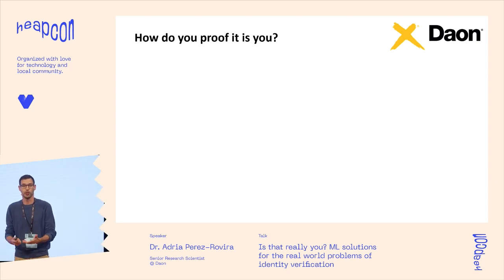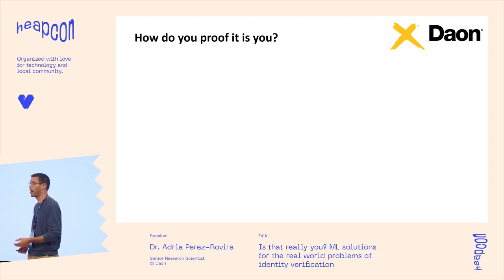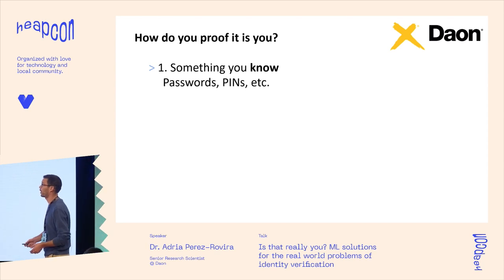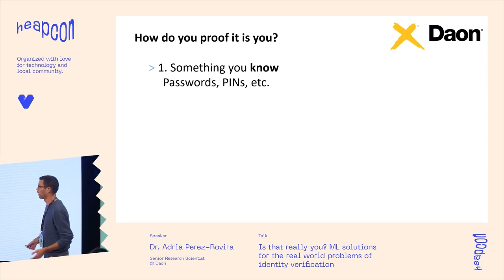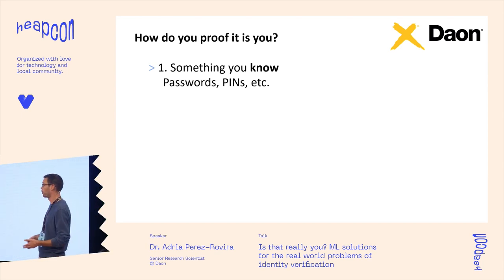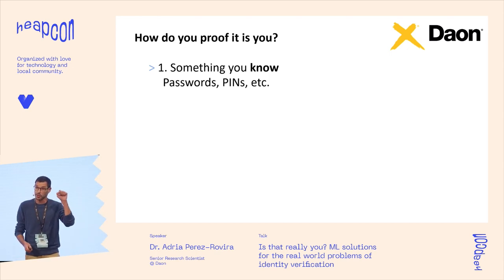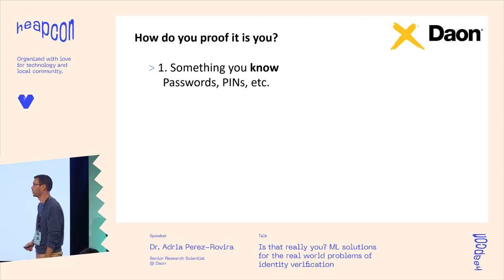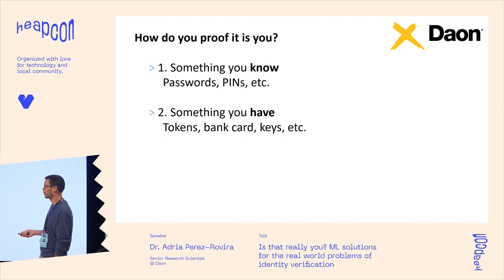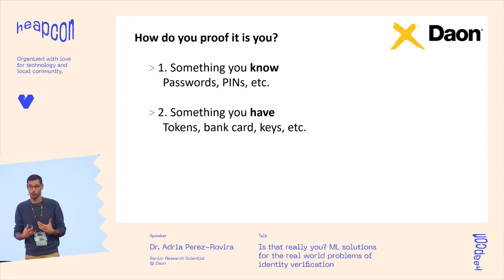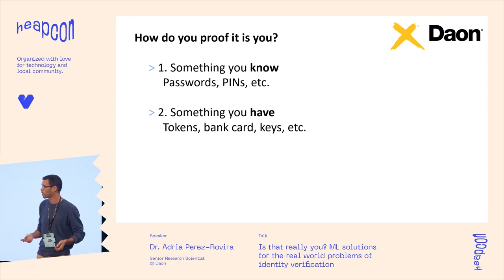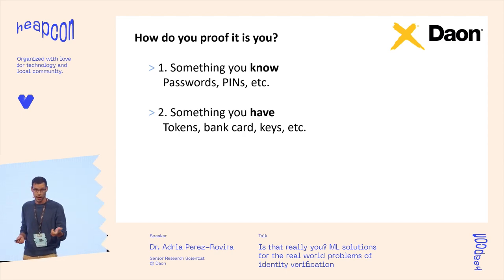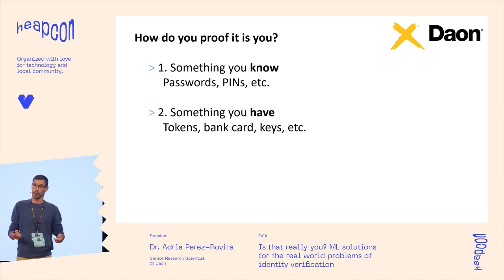First of all, how can you prove that it is you who you're claiming to be? There are three ways. The first one is by using something that you know — the very familiar passwords, pin numbers. Alternatively, it can be something that you have, something in your possession, like tokens, your bank card, the keys of your house, or your mobile phone.